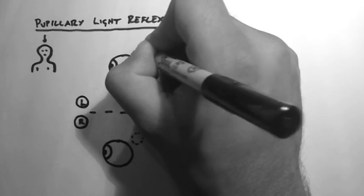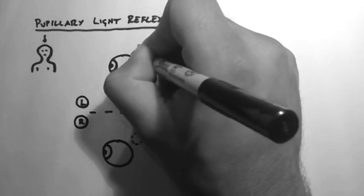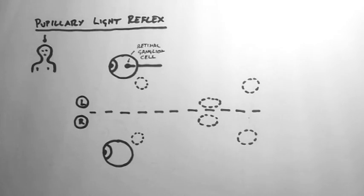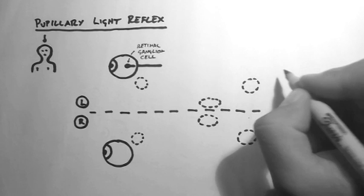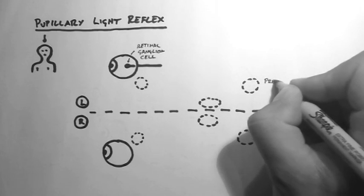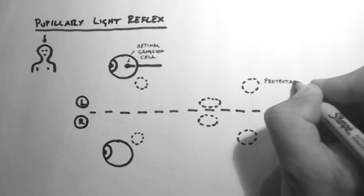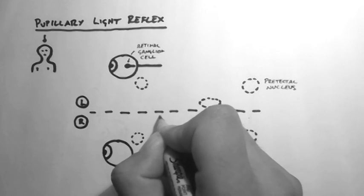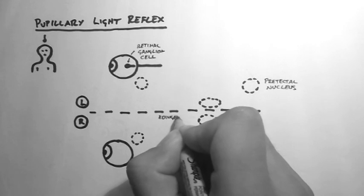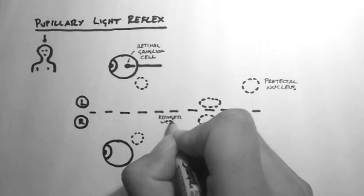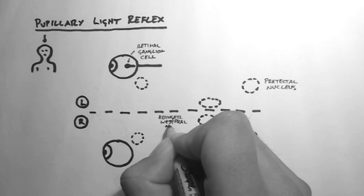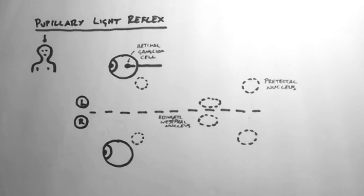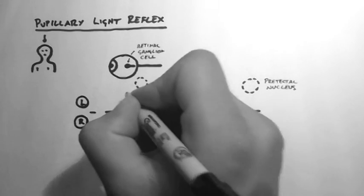Here is the retinal ganglion cell of the eye and it receives input from rods and cones. This is the pre-tectal nucleus in the midbrain. These are the Eidinger-Westphal nuclei, also in the midbrain. And note that they are matching nuclei on the opposite side of the midline.